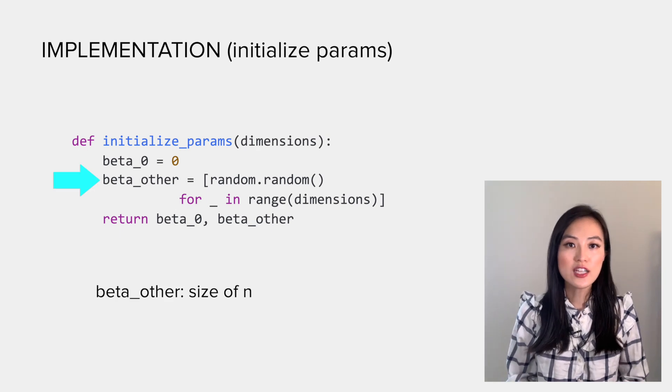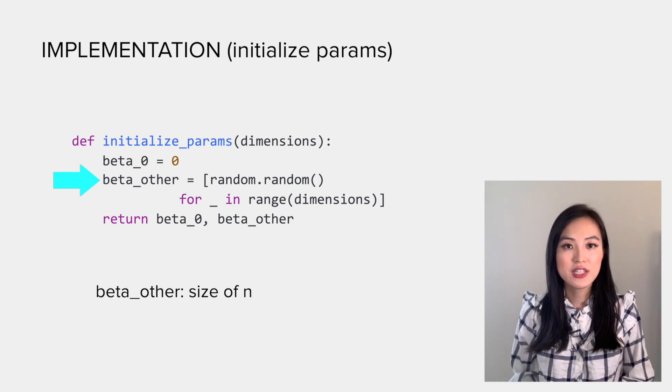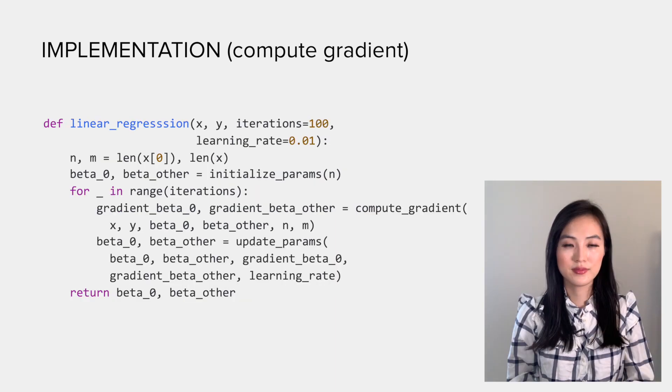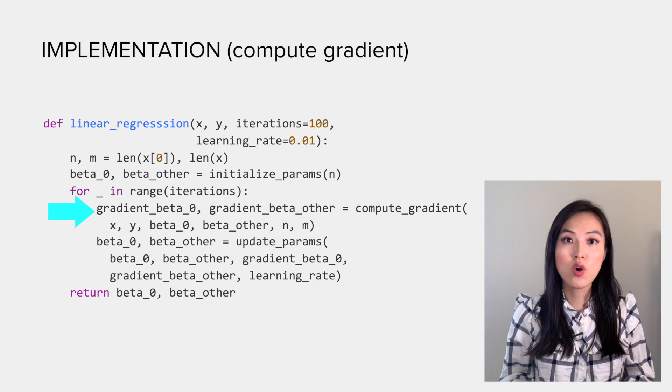The first function is about parameter initialization. We can simply initialize beta_0 as zero. For other betas, we could use a vector to hold all of them, and the vector has the same size as the number of dependent variables, which is n. Each beta is initialized randomly.